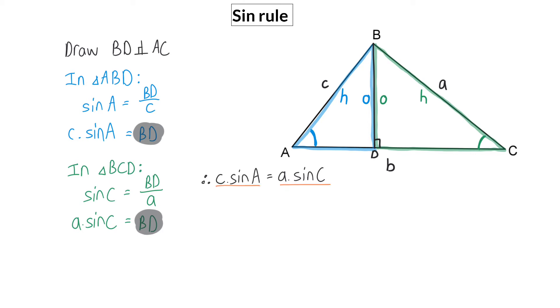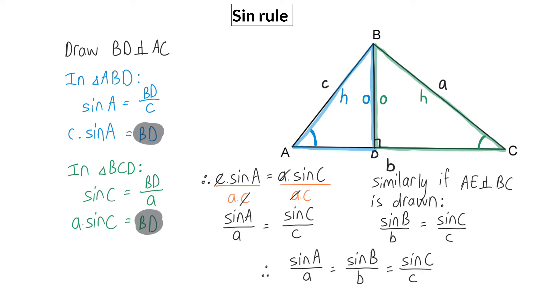And if I now divide on both sides by A multiplied with C, once I've simplified, I will end up with sin of A over A is equal to sin of C over C. Similarly, by adding a perpendicular line drawn from angle A to BC, I will be able to prove that sin of B over B is equal to sin of C over C. And then I've proven my complete sin rule.